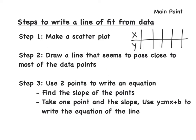One of the main points of the lesson is to figure out how to actually write a line of fit from the data that they give you. So, I have three steps for you. The first step is you need to make a scatter plot. They will give you the information in a table, so all that you have to do is plot it at the x and y coordinates.